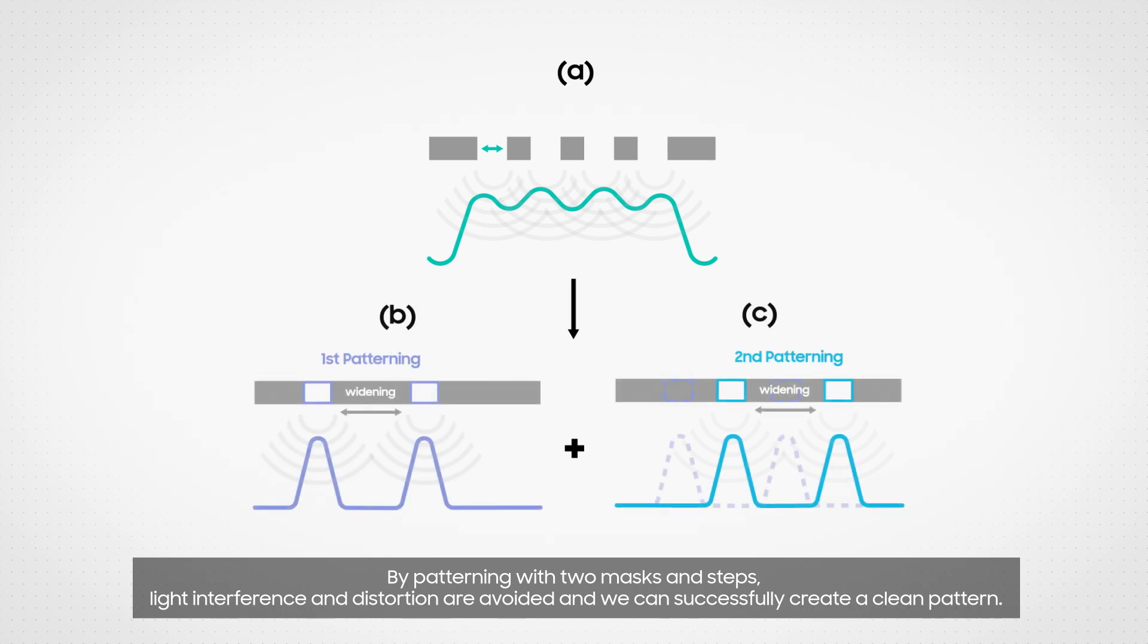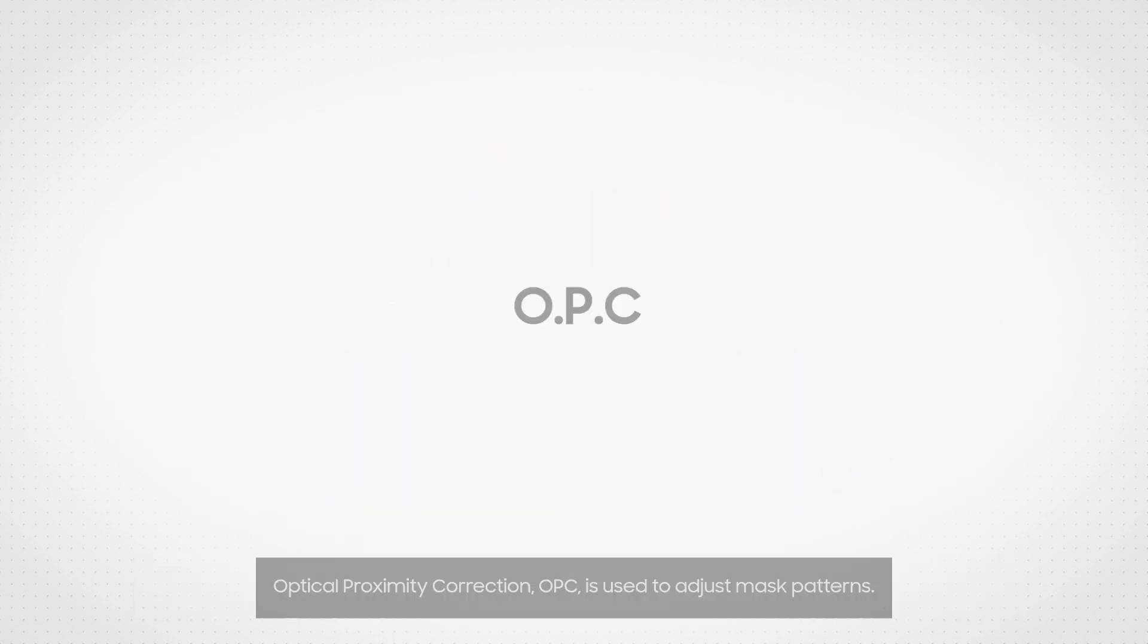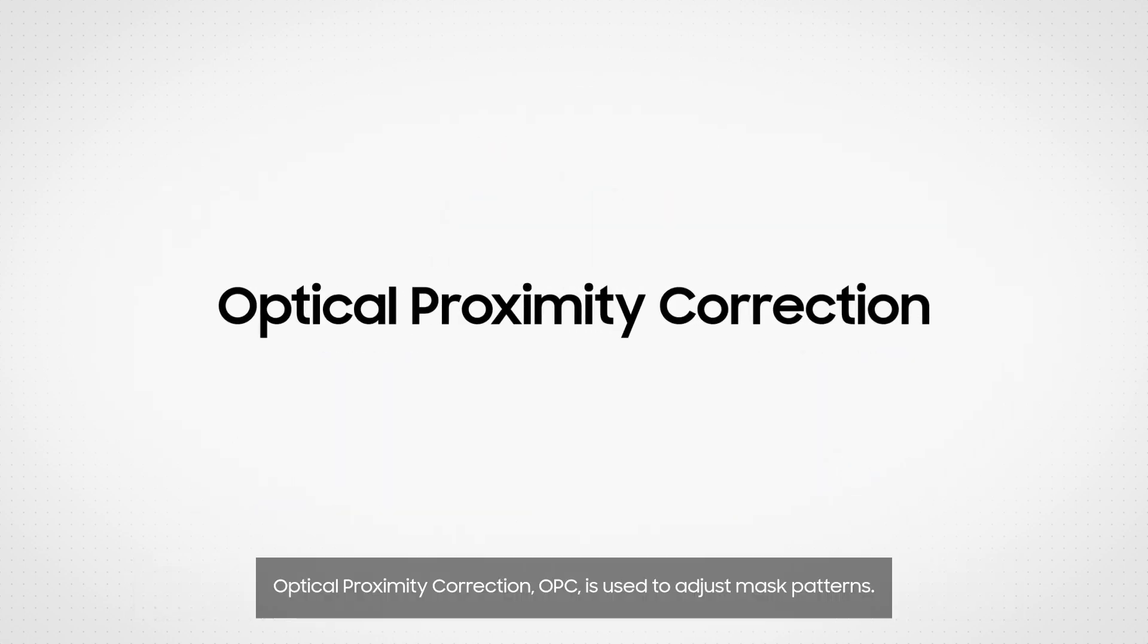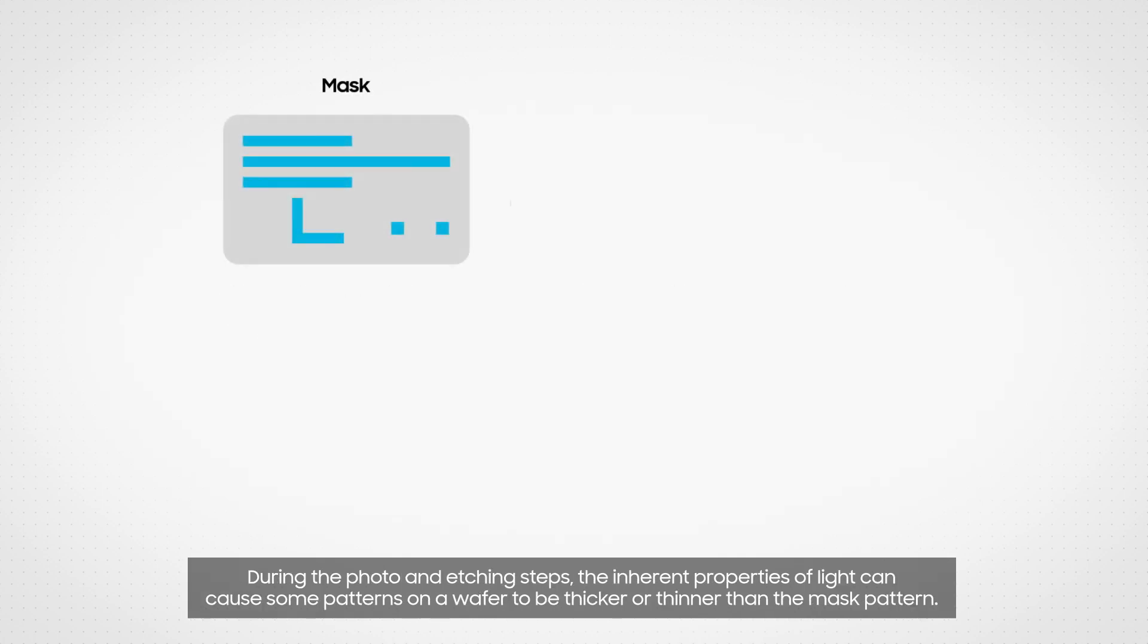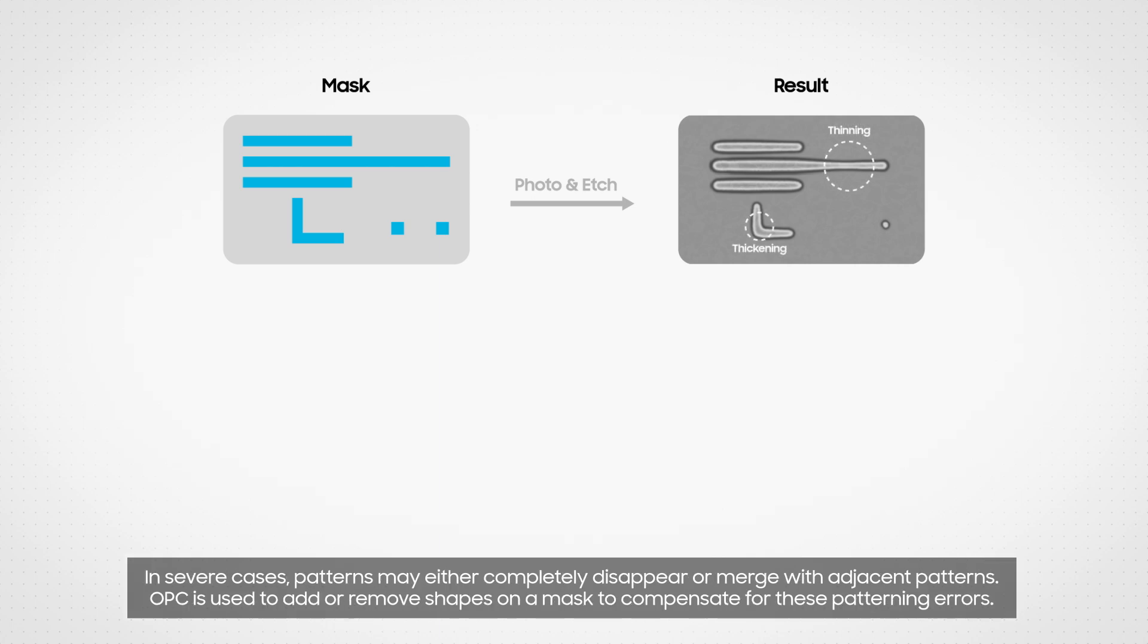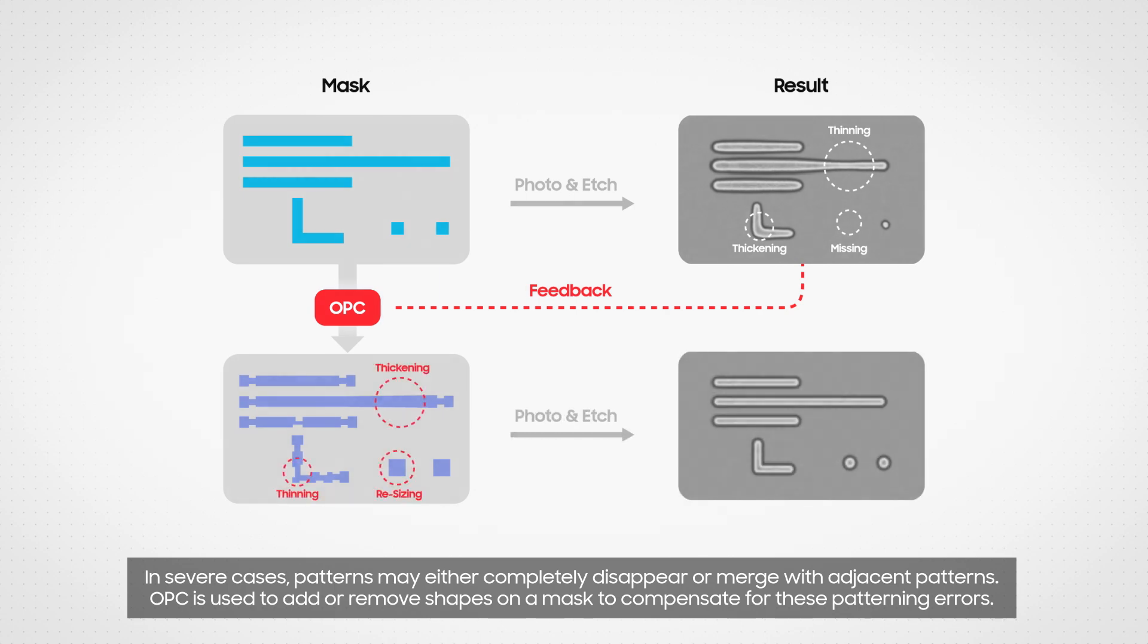Optical Proximity Correction (OPC) is used to adjust mask patterns during the photo and etching steps. The inherent properties of light can cause some patterns on a wafer to be thicker or thinner than the mask pattern. In severe cases, patterns may either completely disappear or merge with adjacent patterns. OPC is used to add or remove shapes on a mask to compensate for these patterning errors.